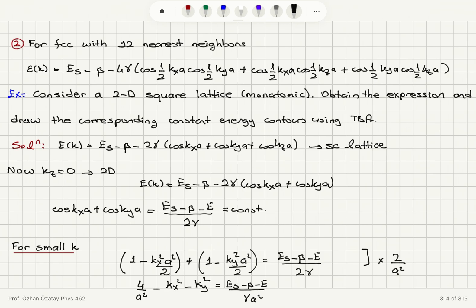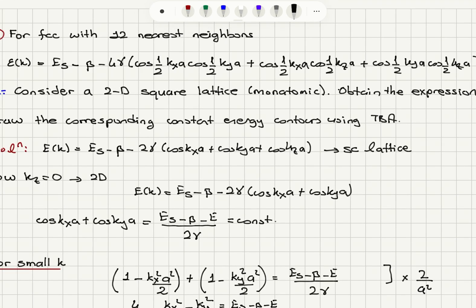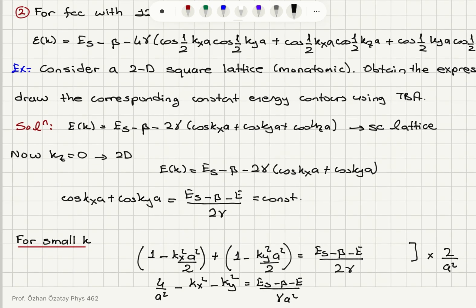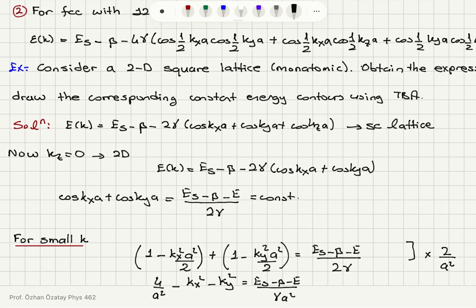Now let's consider another example: a two-dimensional square lattice which is monatomic with a one-atom basis. We obtain the expression and draw the corresponding constant energy contours using the tight binding approximation. For the simple cubic lattice, the energy dispersion is Es minus β minus 2γ (cosine(KxA) plus cosine(KyA) plus cosine(KzA)). For the 2D square lattice, Kz equals 0, reducing it to Es minus β minus 2γ (cosine(KxA) plus cosine(KyA)).